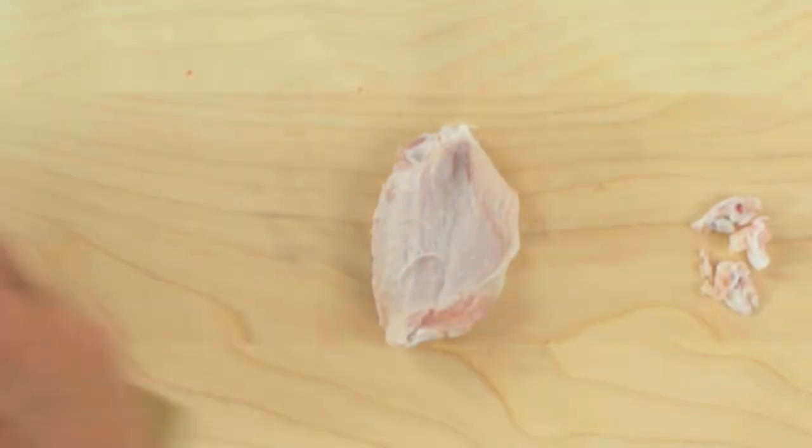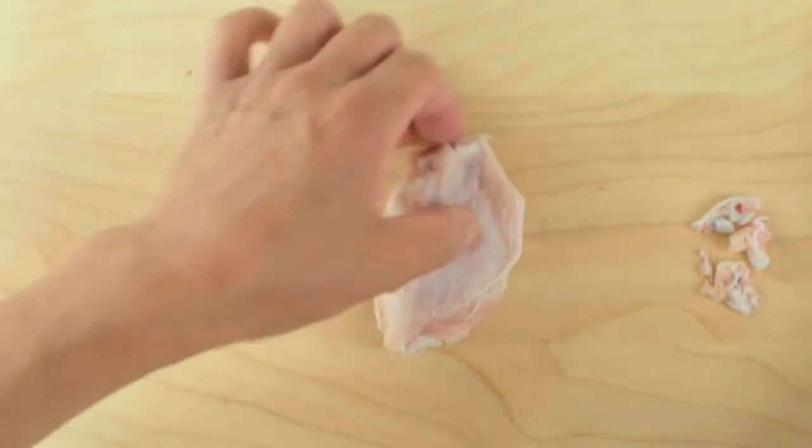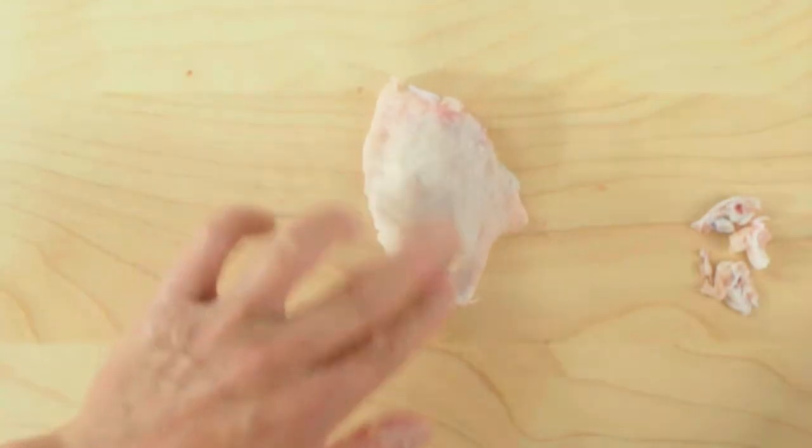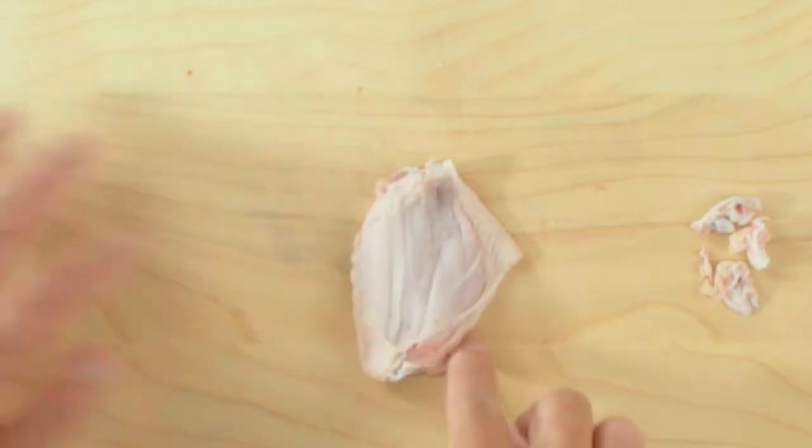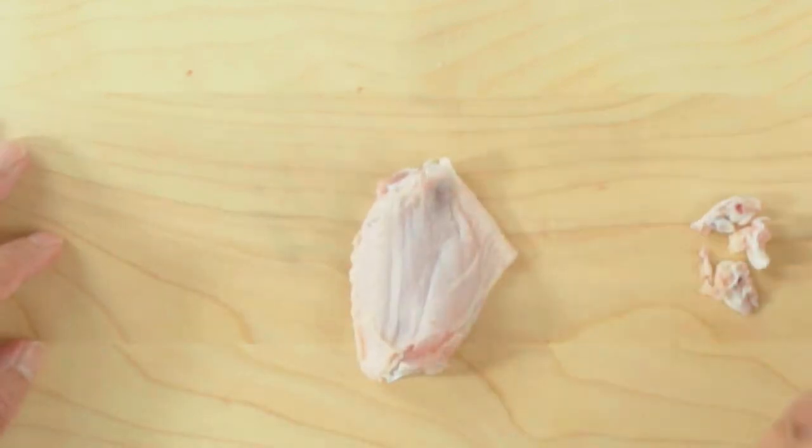Once this is done, open up the wings. This is the outside and this is the inside. Place them so that the inner side is facing upwards and that this triangle that you see here is on your right side.